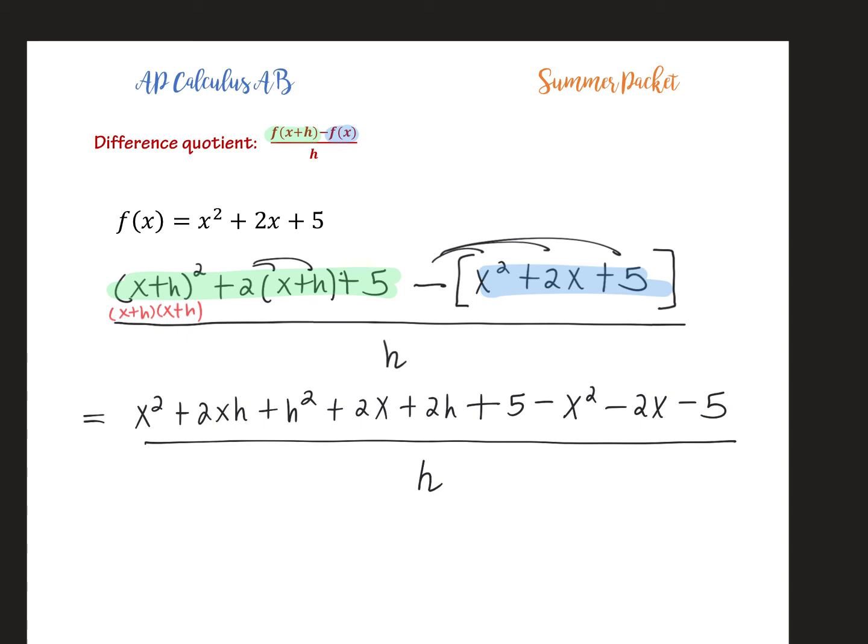And now at this point, let's look closely in our numerator. Numerous terms are going to cancel out. x² and negative x². 2x and negative 2x. 5 and negative 5. In fact, here's a hint to you. At that point, everything that does not have an h in it should cancel out. And so just to make that clear, notice everything that remains in my numerator has an h in it. So if there's something that doesn't have an h left over, stop, go back, you messed up somewhere.